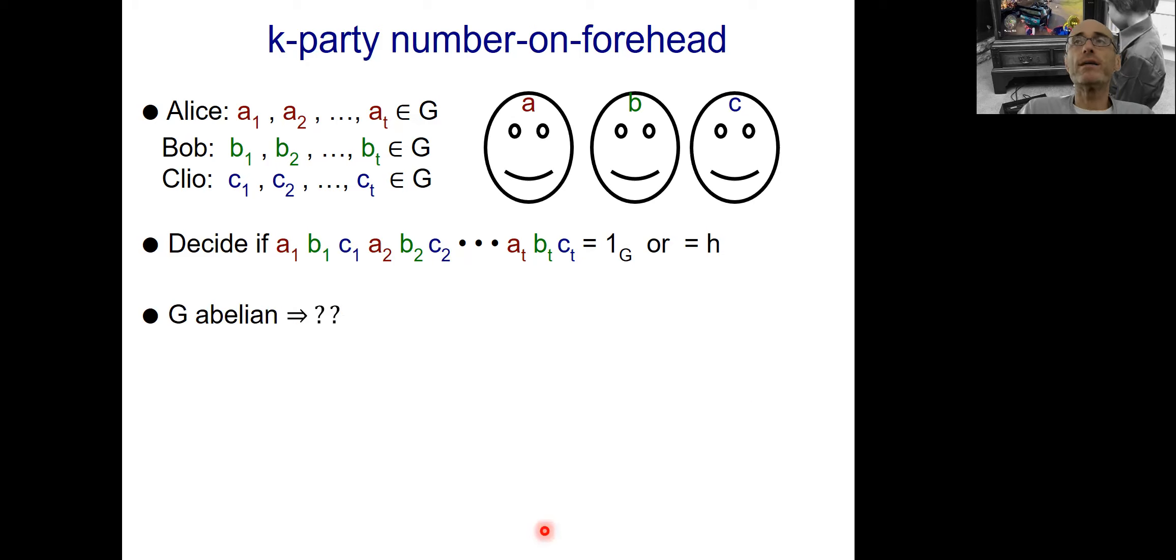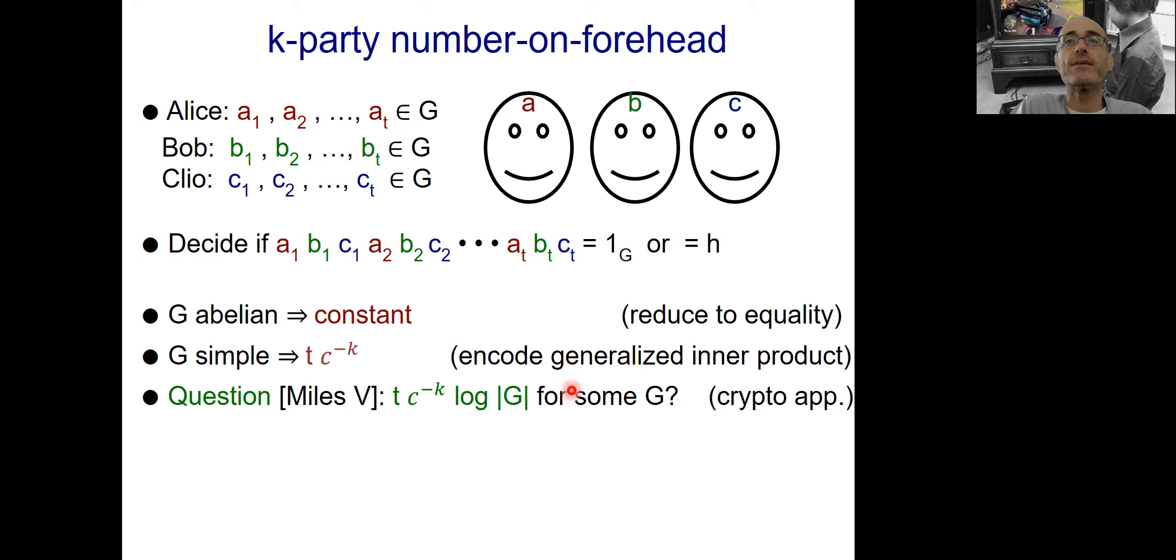Okay, so what was known here? Well, if G is abelian, same story as before. I can permute everything, and the communication becomes constant. If G is simple, well, then again, I can reduce to this generalized inner product to obtain the state-of-the-art bounds in the area, which is the length of the tuple T times something exponentially smaller in the number of parties. And this is what prevents us from having k, which is too large. And again, the question really for the cryptographic application was to improve the multiparty bounds to take into account the log size of the G factor.